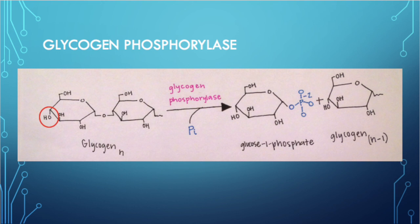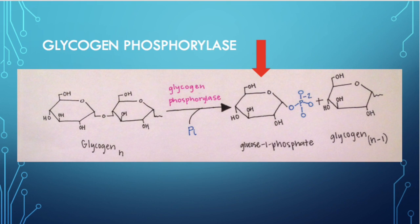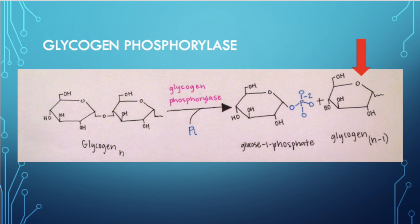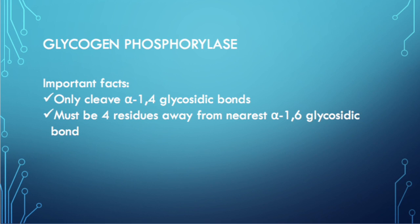The cleavage of this bond is done in association with an inorganic phosphate rather than ATP, in order to spare energy. This reaction will not occur unless the cofactor pyridoxal phosphate, which acts as an acid-base catalyst, is present. Once the reaction takes place, we are left with glucose-1-phosphate and a glycogen chain with one less glucose residue. Glycogen phosphorylase can only cleave alpha-1,4 glycosidic bonds and will only cleave them if there are at least four residues away from the nearest alpha-1,6 glycosidic bond.